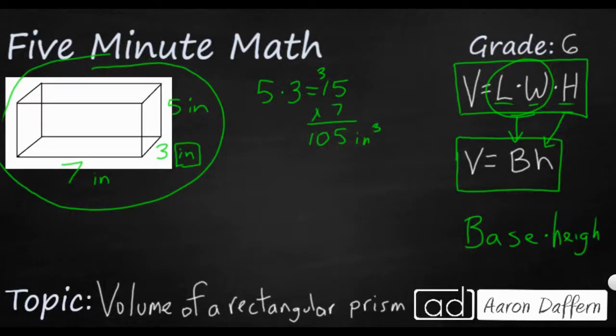So it's going to be the exact same. They're just going to assume that you know what the base is. And when we're talking about the base of a rectangular prism, it's either going to be a square or a rectangle. So first, you're going to need to find the area of the base.